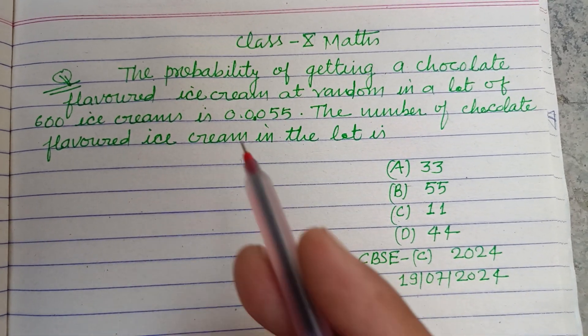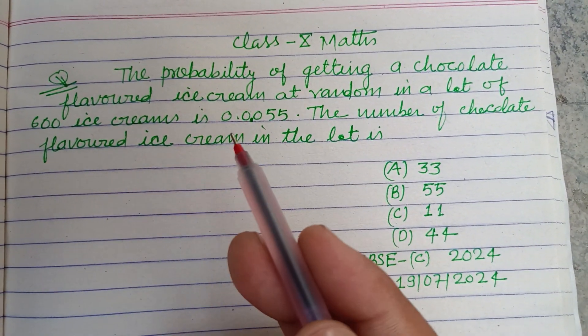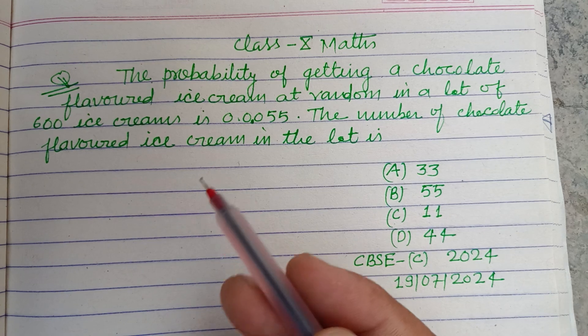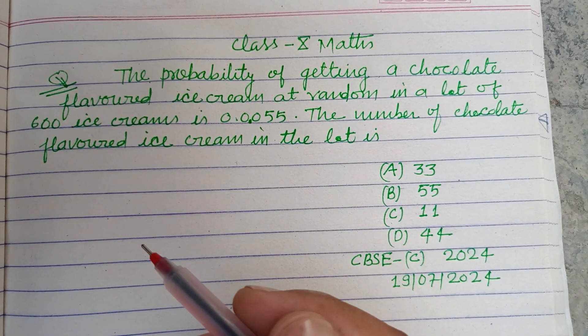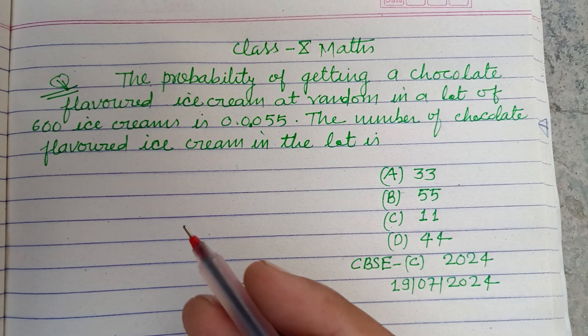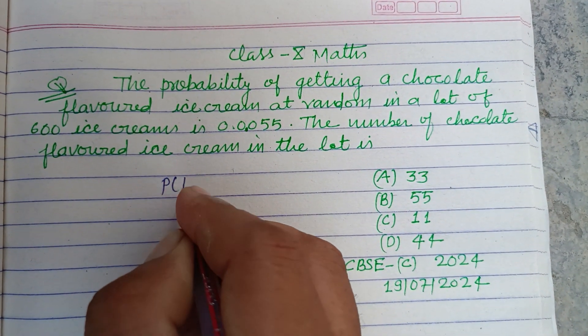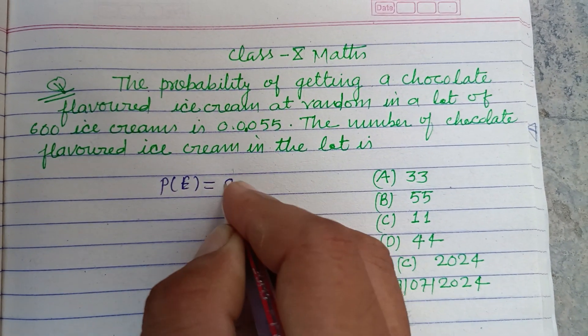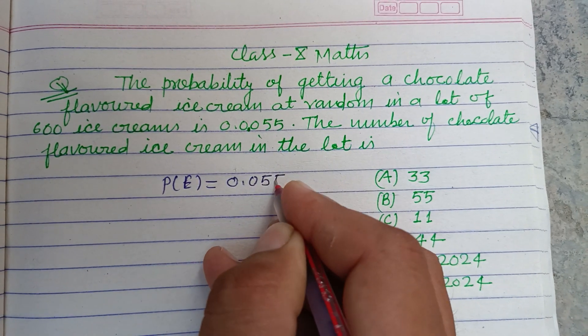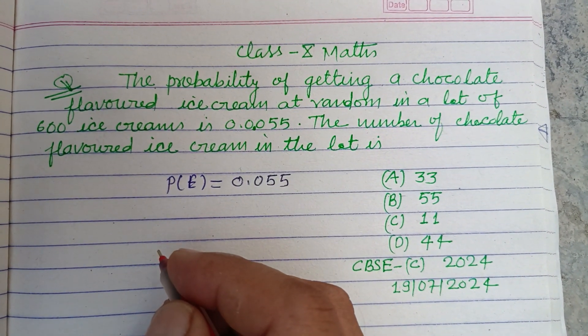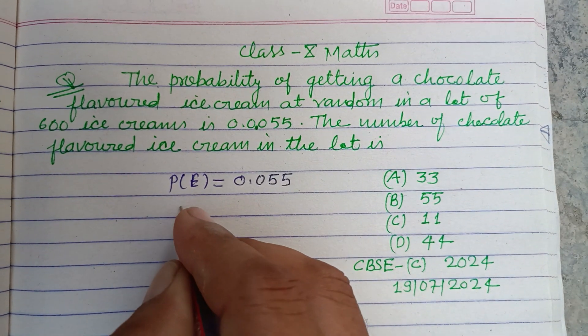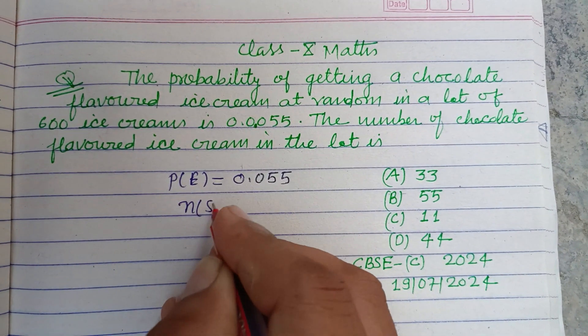The probability of getting a chocolate flavor ice cream at random in a lot of 600 ice creams is 0.055. So probability of getting chocolate ice cream is 0.055, and the lot of ice creams, so n(S) is given to us as 600.